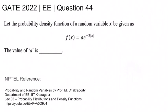This is GATE 2022 electrical question number 44. Let the probability density function of a random variable x be given as f(x) equal to a e^(-2|x|). The value of a is being asked.